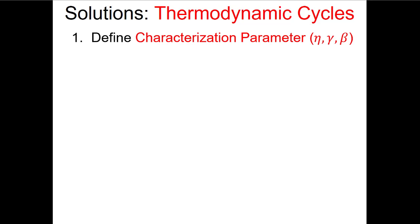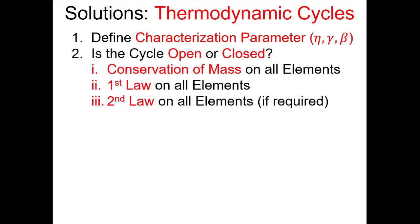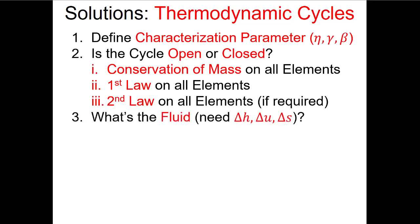For heat engines, the characterization parameter is thermal efficiency; for refrigeration and heat pump cycles it's the coefficient of performance. Second, ask whether the cycle is open or closed — specifically, whether the individual processes inside the cycle will be treated as open or closed systems. Then do conservation of mass — trivial for closed systems — followed by the first law on all different processes, and the second law on elements if required.